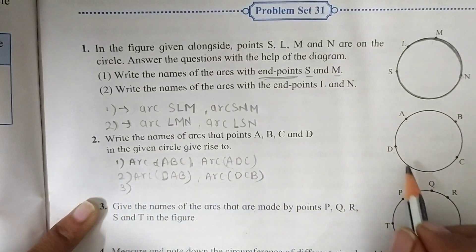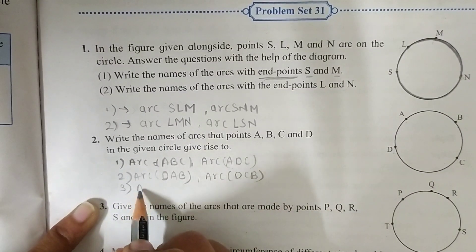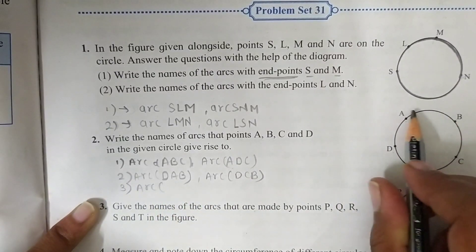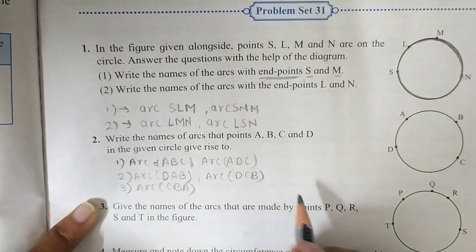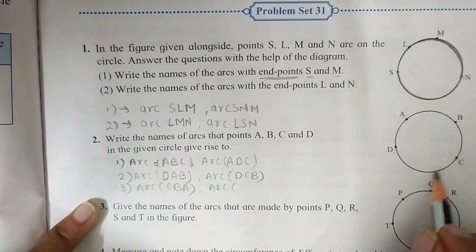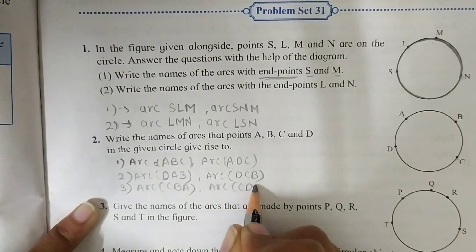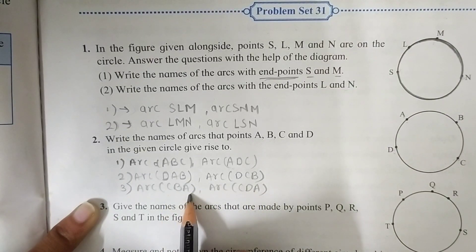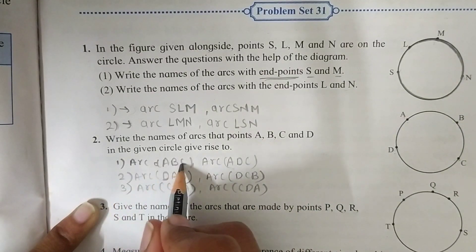Now we are going to start from C. Let's write here arc C, B, A. Then arc C, D, A. This two arcs have C and A as the end points, like A, C.